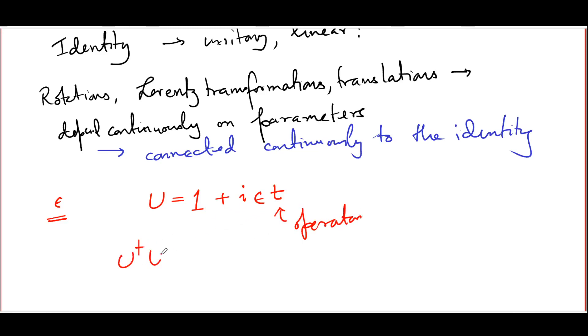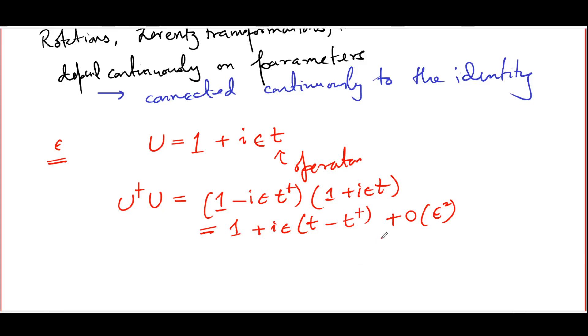You look at u dagger u which is identity minus i epsilon t dagger times identity plus i epsilon t. And if you multiply this out, you will see that what you are going to get at least up to order epsilon is the following. Identity plus i epsilon t minus t dagger. Of course, higher order terms might be there. But since you have not written out higher order terms in the expression for u, you have no right to actually discuss what this is right now. And we will see later. There are some nice group theoretical properties which tell us that you can actually talk about the higher order terms as well. But right now, we are just keeping ourselves to first order in epsilon. This has to agree with the identity up to first order in epsilon.